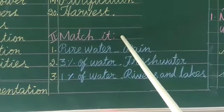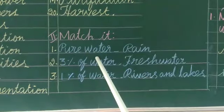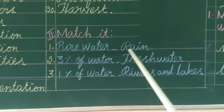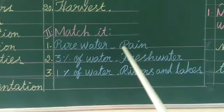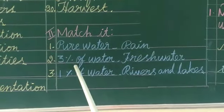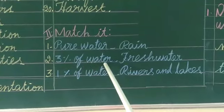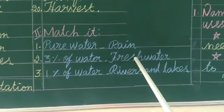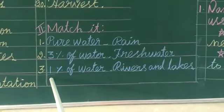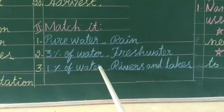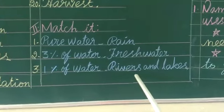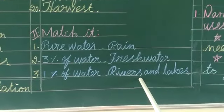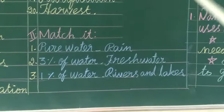Next, Match It. Pure Water, Rain. 3% of Water is Fresh Water. 1% of Water is found in Rivers and Lakes.